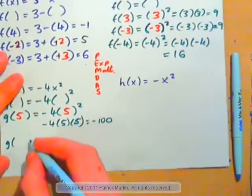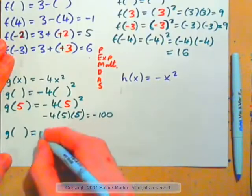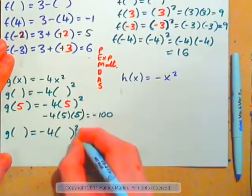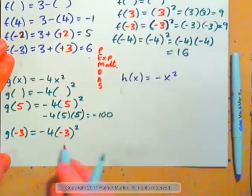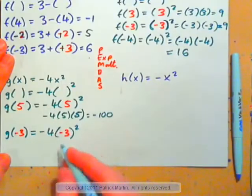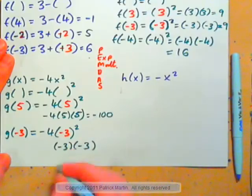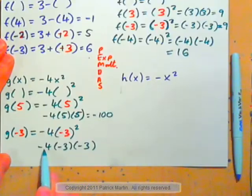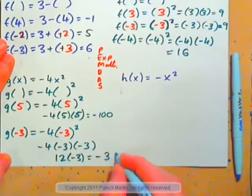Let's figure out g of negative 3. g of parentheses is negative 4 times parentheses squared. The negative 3 goes in for x in the parentheses — the squared touches that. So, that's parentheses times parentheses: negative 3 times negative 3, with negative 4 on the outside. Negative 4 times 3 is positive 12; 12 times negative 3 is negative 36.